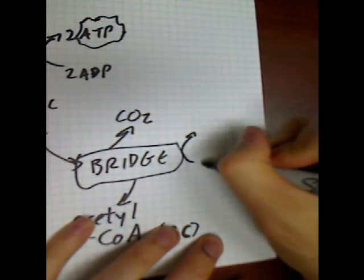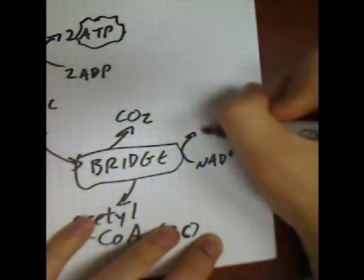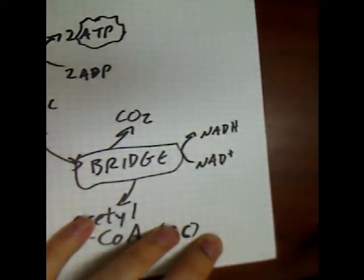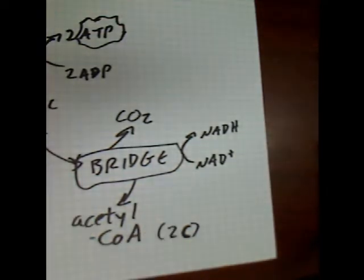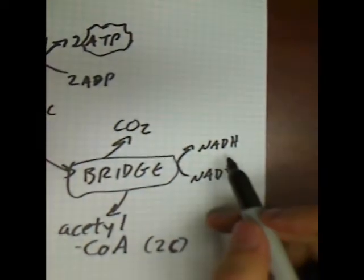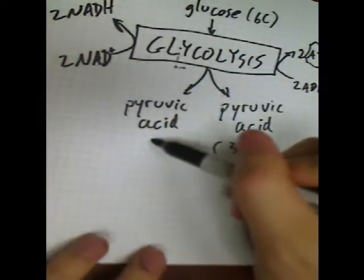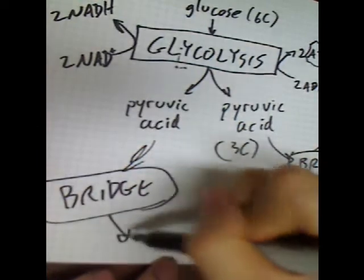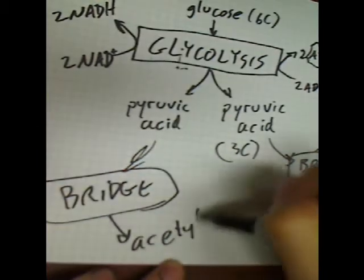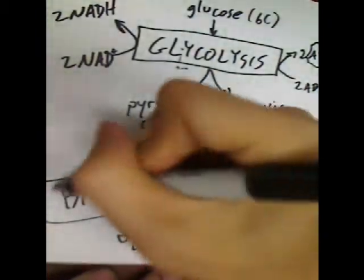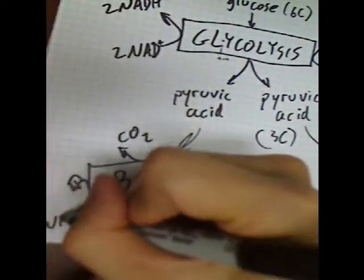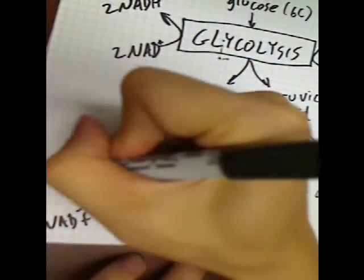In this case, the high-energy molecule that we get to make is we get to turn an NAD into an NADH. So if you're keeping track, we have an NADH from this bridge reaction. But this pyruvic acid is also going to go into its own bridge reaction, and it's going to produce an acetyl-CoA, carbon dioxide, and convert an NAD into an NADH.